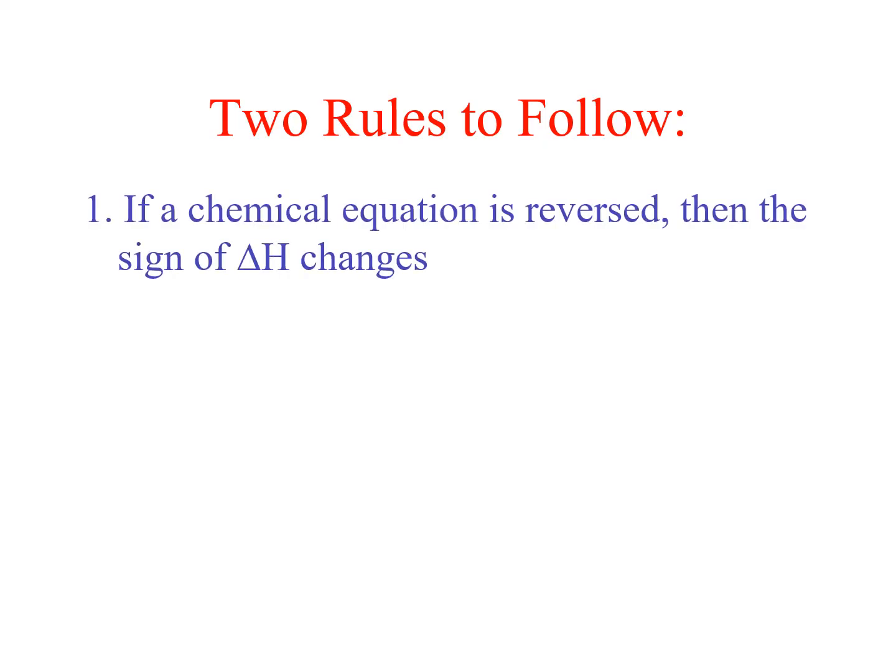Now there's a couple of legal moves that you can do. So rules to follow. If a chemical change is reversed, then the sign of the delta H changes. What I mean by reverse is you can literally take an equation that looks like this, flip it around. So your arrow is going to go in the other direction. And that means that this delta value is going to change. If it was positive, it goes to negative. Negative goes to positive. So you're allowed to flip entire equations around.